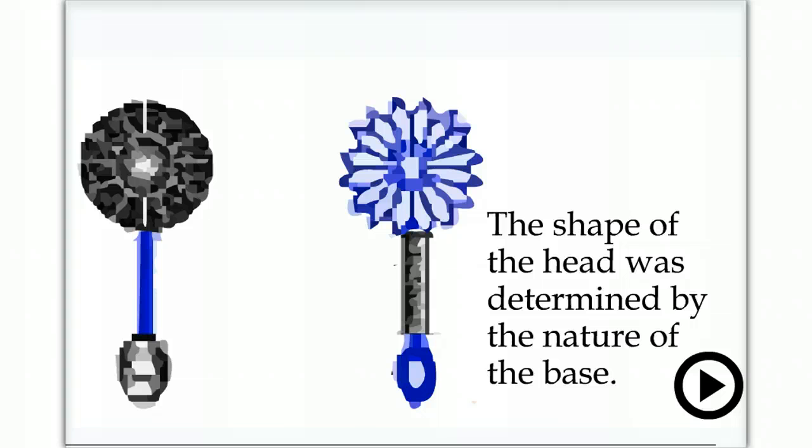He concluded that the information needed to determine head shape was located in the region of the cell containing the nucleus, and most probably within the nucleus itself.